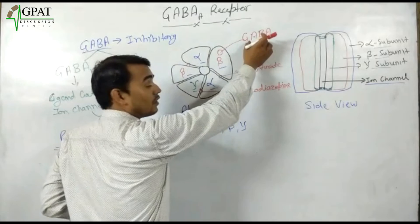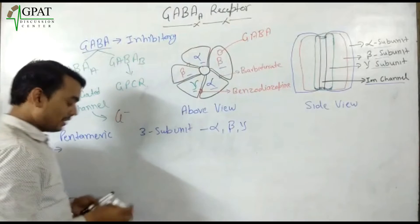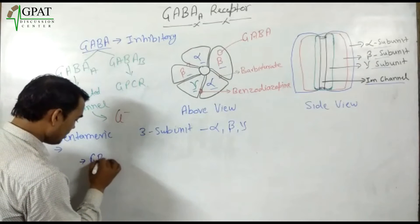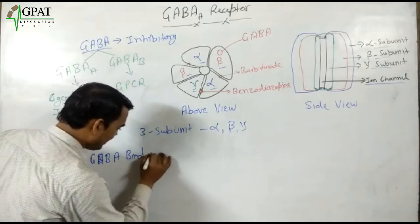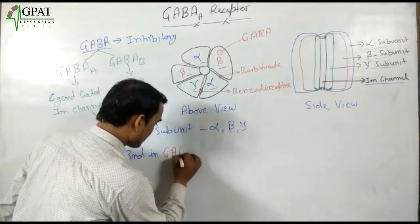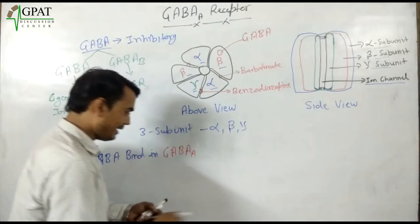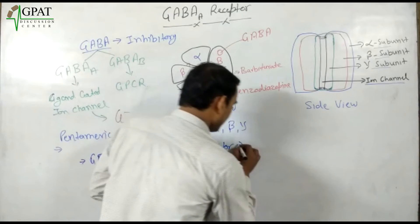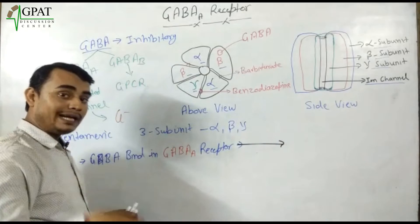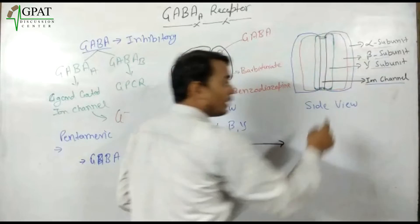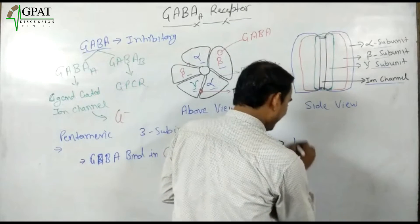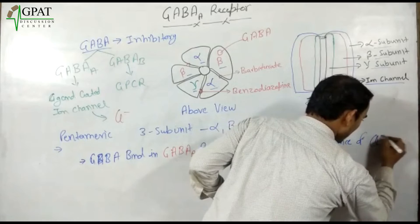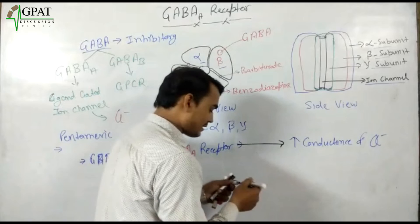So to summarize: GABA binds at the beta subunit, barbiturate binds at the alpha-beta interface, and benzodiazepine binds at the alpha-gamma interface. When GABA is released from neurons, it acts on the beta subunit. GABA binding to the GABA-A receptor increases the movement of chloride — that is, the conductance of chloride increases.